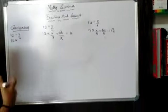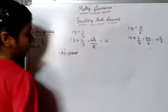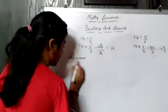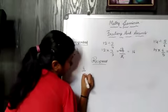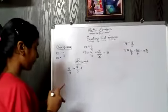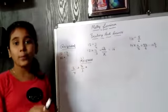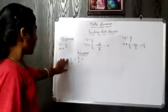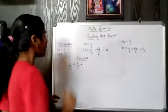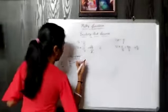Now let us find reciprocals and identify whether fractions are proper, improper, or mixed. If the given number is 3 upon 7, its reciprocal is 7 upon 3 — we reverse numerator and denominator. Now we have to identify what type of fraction 7 upon 3 is.